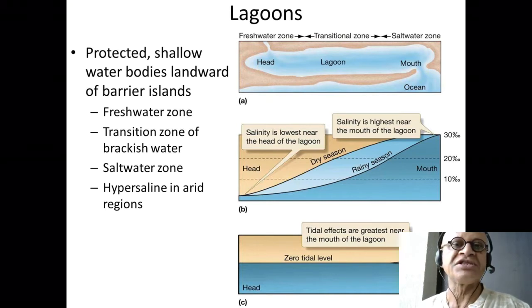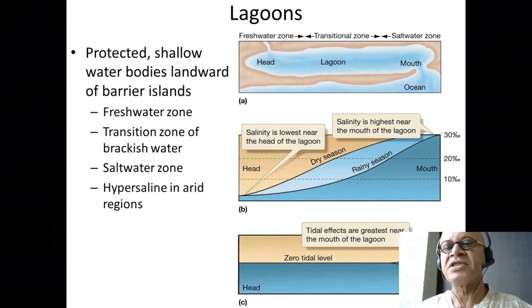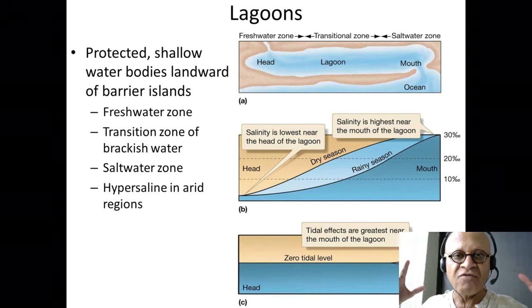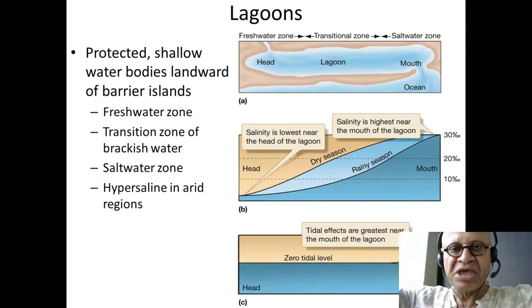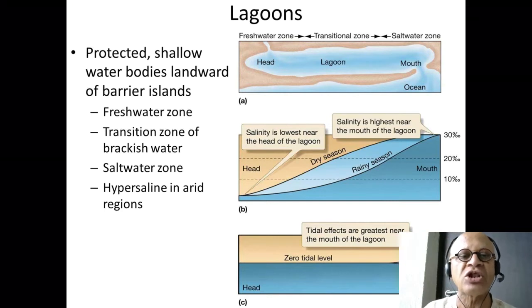You have the mouth which connects it to the ocean, so the tidal range is going to be very high here. You can see the tidal range is very high at the mouth but the tides get greatly damped as you go up into the lagoon. This is different from the Bay of Fundy where you have a huge estuary with tidal range coming in all the way and getting amplified. So lagoons are protected shallow water bodies landward of the barrier islands.